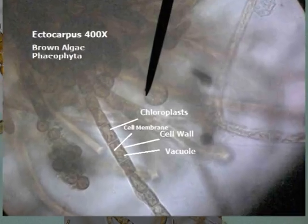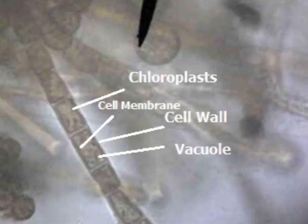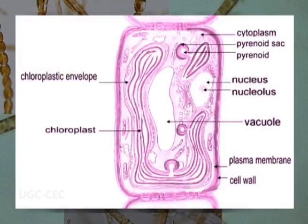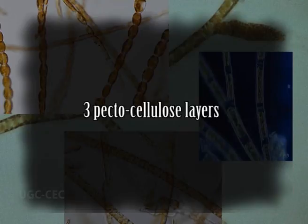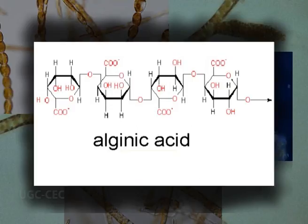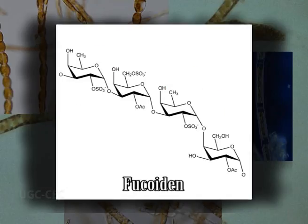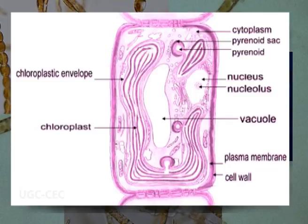Now we come to the cell structure of Ectocarpus. The cells of Ectocarpus are small, rectangular to cylindrical, and uninucleate. A typical cell contains a ribbon-like or band-shaped chloroplast, often called chromatophore, with a stalked pear-shaped pyrenoid. The cell wall is thick and mucilaginous, consisting of three pectocellulose layers. The characteristic gelatinous substance present in the cell wall is composed of algine and fucoidine. Inner to the cell wall, a cell membrane is present which encloses the protoplast.